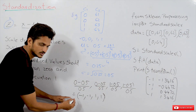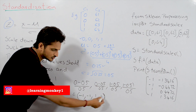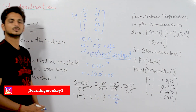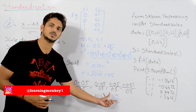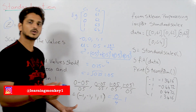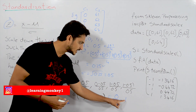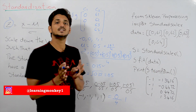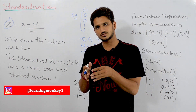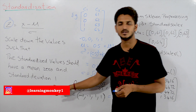Let's verify: the mean of the standardized values is (−1 + −1 + 1 + 1) = −2 + 2 = 0, divided by 4 is 0. So the new standardized values have a mean of 0. You can also check that the standard deviation is 1. This is what standardization means: it is a technique that scales down the values such that the new standardized values have a mean of 0 and a standard deviation of 1.